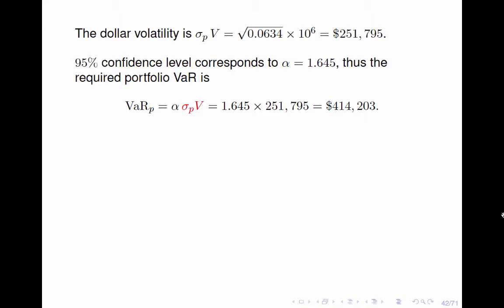Note that 95% confidence level corresponds to alpha equal to 1.645. Thus, the required portfolio VAR is given by alpha times the dollar volatility of the portfolio return, that is $414,203.